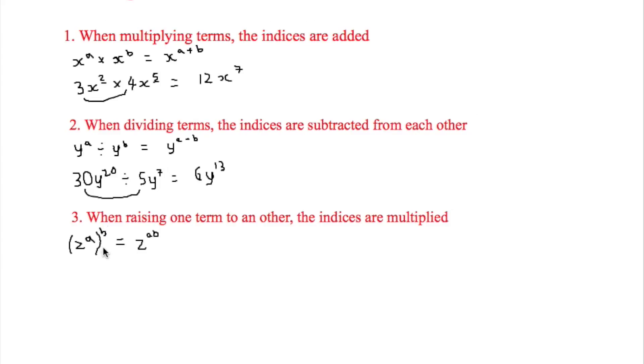So finally rule 3 is when raising one term to another the indices are multiplied. So we have used z and z a and then if this is raised by b then that is simply equal to z to the a times by b.